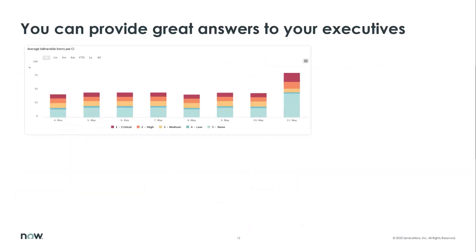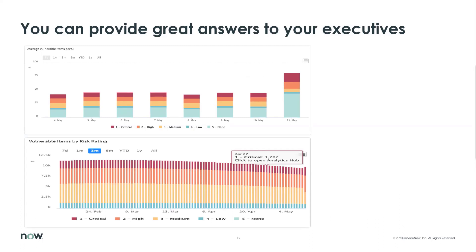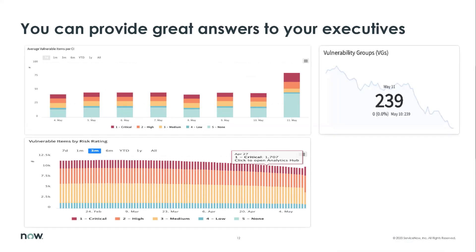You can provide great information to your executives about what's going on in your environment. We can deliver dashboards including information about our CIs and the vulnerable items associated with each CI. When we look at vulnerable items based on their risk rating over time, we can identify whether we're remaining flat or whether our success is increasing or decreasing. We can see a slight decrease over time, which means that we're addressing all of these vulnerabilities in a timely manner. We can also group these systems together logically based on specific types of vulnerabilities, specific types of CIs.